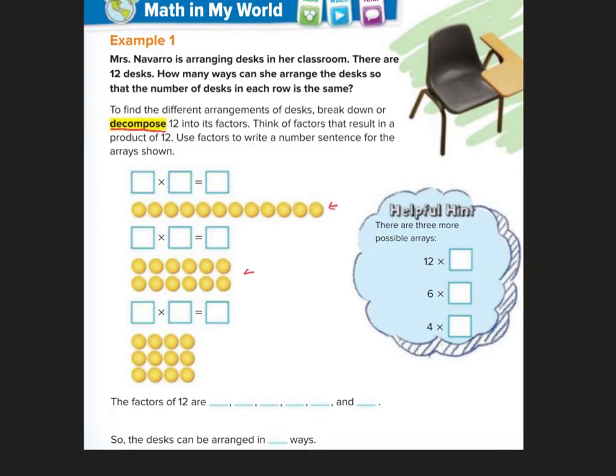Use factors to write a number sentence for arrays shown. So these are arrays. Here I have 1 group of 12 is 12. Here I have 2 groups. How many are in each group? 1, 2, 3, 4, 5, 6. Groups of 6 are 12. And here I have 3 groups of 4 and that also is 12.